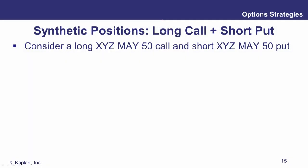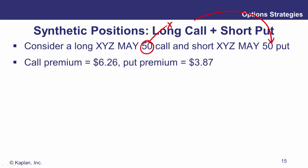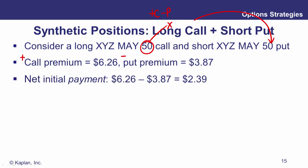Putting some numbers in: a long 50 call — there's your strike — and a short 50 put. Same strike, same expiry, same underlying. You're going to have to pay for the call; that's going to cost $6.26. You're going to receive the put premium in because you're selling it. Your net initial cost — always worthwhile calculating early in strategy analysis — is $6.26 out for the call minus $3.87 in for the put. That's $2.39.